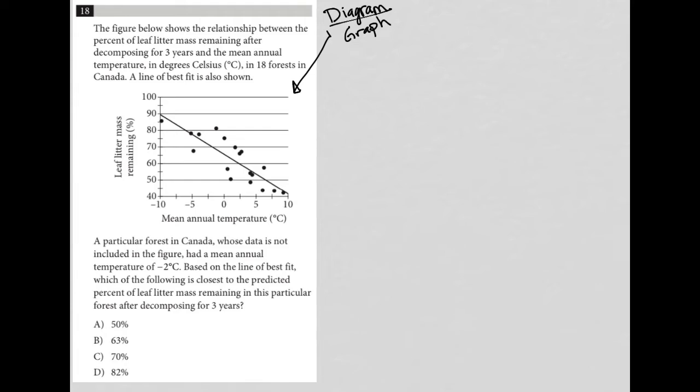So the x-axis of this graph is mean annual temperature. The y-axis is leaf litter mass remaining. We go from negative 10 to positive 10 and from 40 up to 100 on the y-axis. I'm going to start reading all this information that's been provided to us and then let's see how this question wants us to use the graph to help find the answer.